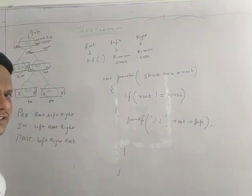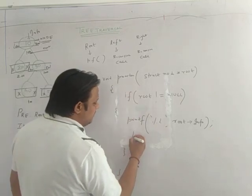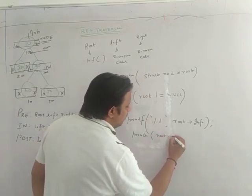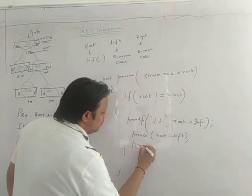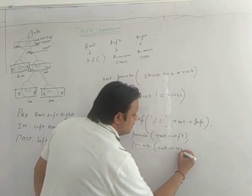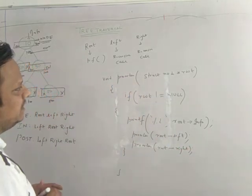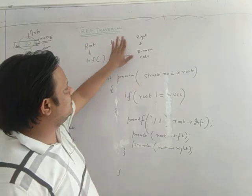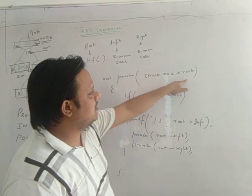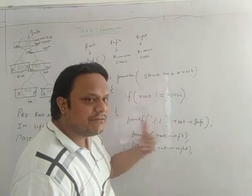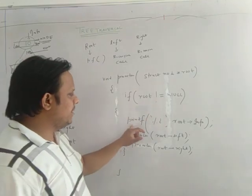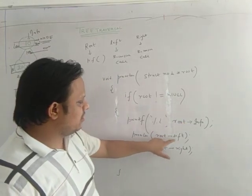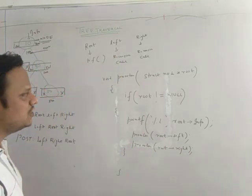Next comes right, which is also a recursive call: preorder(root->right). So this is the basic function of pre-order traversal: void preorder(struct node *root) — if root not equals null, printf root->info, preorder(root->left), preorder(root->right). Root means printf, left means recursive call, right means recursive call.